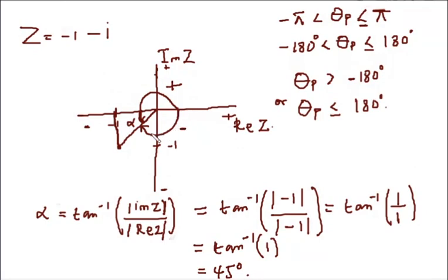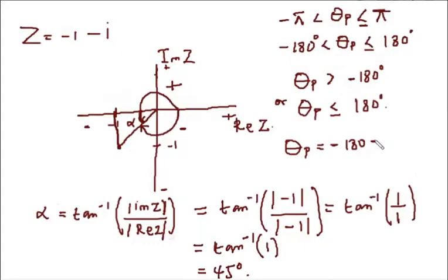From here to here, we know that the distance is 180 degrees. Therefore, to get theta_p, since this angle is in the negatives, we know that negative 180 plus 45 degrees gives us negative 135 degrees.